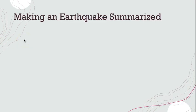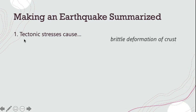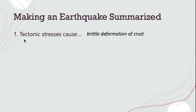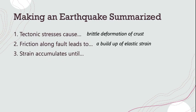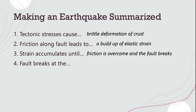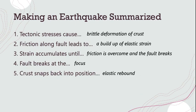Making an earthquake summarized: First, tectonic stresses cause brittle deformation of the crust. Friction along the fault leads to a buildup of elastic strain. Strain accumulates until the friction is overcome and the fault breaks. The fault breaks at the focus, and from there the crust snaps back into position through the process of elastic rebound, releasing the seismic waves.